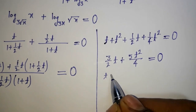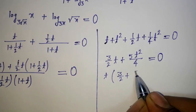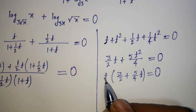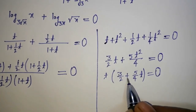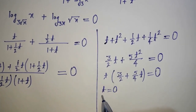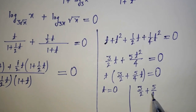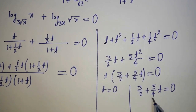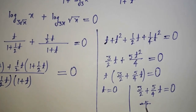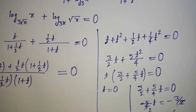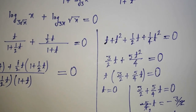Factoring out t: t · (3/2 + (5/4)·t) = 0. So either t = 0, or 3/2 + (5/4)·t = 0, which gives t = −6/5.